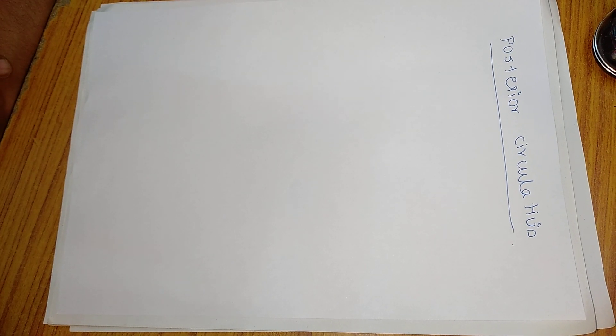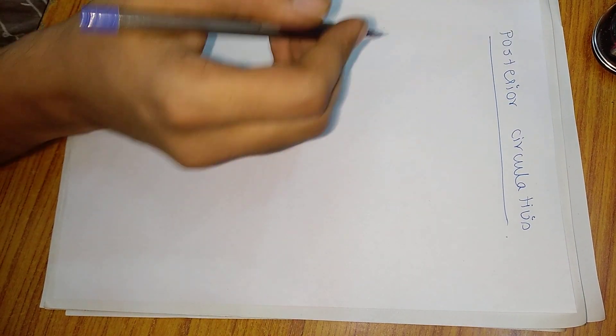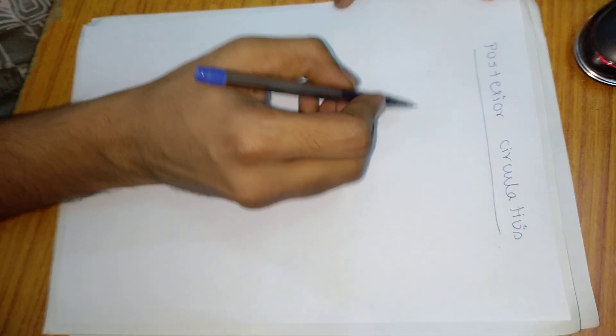Hi everyone, today we will see about posterior circulation. This topic — as a medicine resident, if you are getting a posterior circulation stroke in your final exam as a long case, the examiner might ask you to draw the posterior circulation broadly. You should know the branches mainly of the vertebral artery and also the basilar artery. Let us see in short. First, we will draw the brainstem.